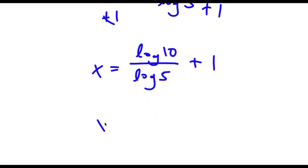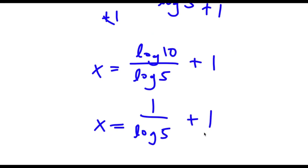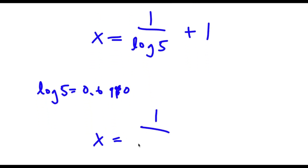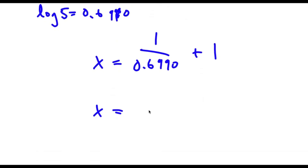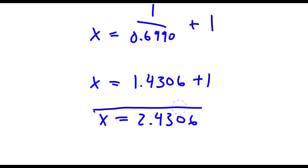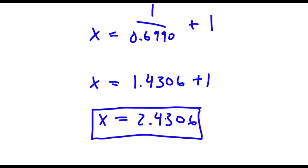Now log 10 is the same thing as 1, so x equals 1 over log 5 plus 1. Log 5 equals 0.6990, so x equals 1 over 0.6990 plus 1. Now 1 over 0.6990 is 1.4306, plus 1 equals 2.4306. So that is our answer.